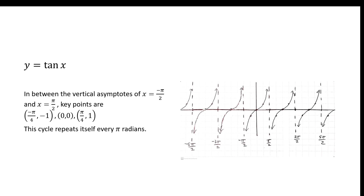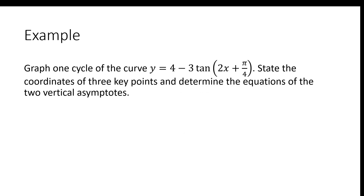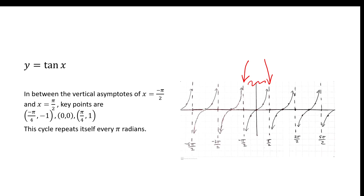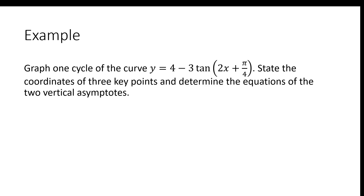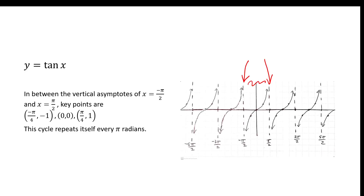In between the vertical asymptotes, we have a few key points. We're going to focus our attention on one cycle. This is a periodic function that has the same period repeating over and over an infinite number of times. We're going to focus our attention on one of those cycles, specifically the one in between the two arrows. We see there are certain key points that we're going to need to know. We're now going to graph one complete cycle of a transformed curve, state the coordinates of three key points, and determine the equations of two vertical asymptotes. Our parent function will be y equals tan x.